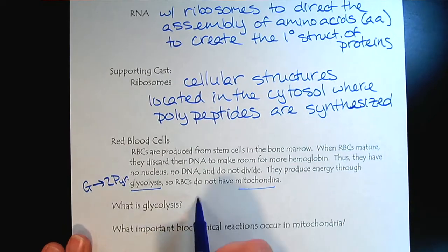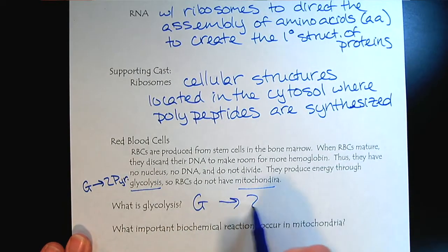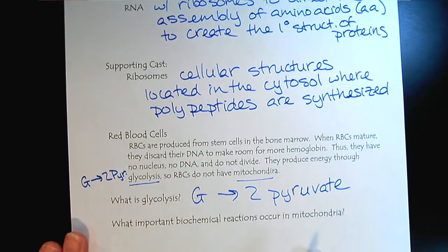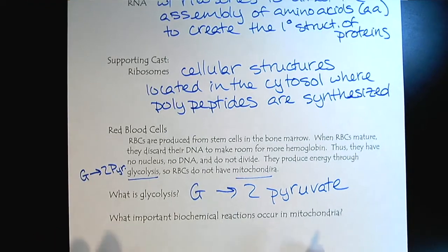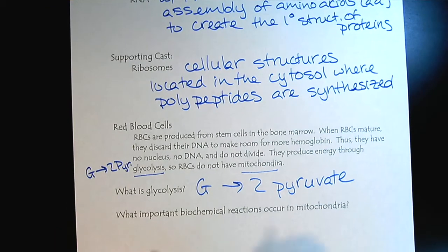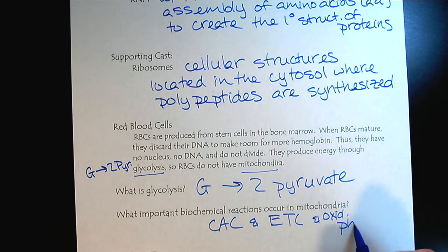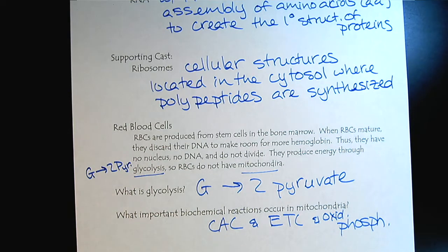It's hard to imagine cells without mitochondria, because all kinds of important stuff happens there. We've got the citric acid cycle, the electron transport chain, and oxidative phosphorylation. So now let's look more closely at the basic building blocks.